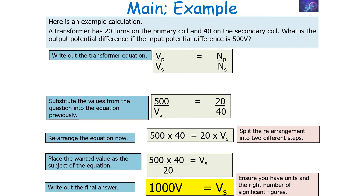Rearrange the equation by bringing the bottom terms to the top of the other side, so it becomes 500 times 40 equals 20 times VS. Then make VS the subject: VS equals 500 times 40, all divided by 20. Writing out the final answer gives 1000 volts, with correct units and the right number of significant figures.